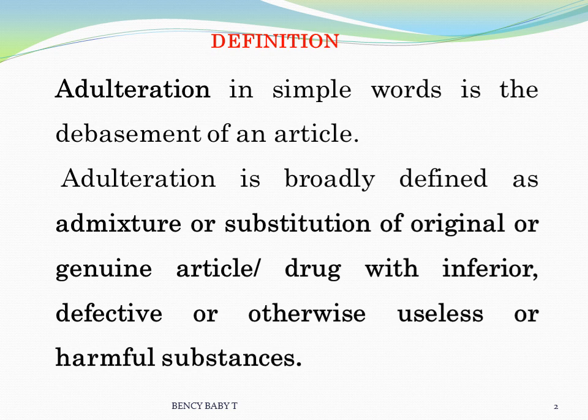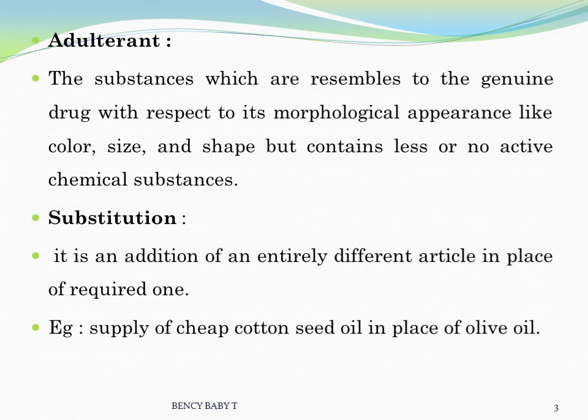Adulteration can be defined as the mixture or substitution of an original or genuine article with inferior, defective, or otherwise useless or harmful substances. An adulterant is a substance which resembles the genuine drug with respect to its morphological appearance like color, size, and shape, but contains less or no active chemical substances.